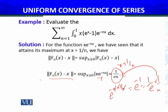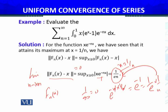To prove uniform convergence, taking the limit as n → ∞ of 1/(en) gives 1/∞ = 0. So we have proved that f_n(x), the sequence of partial sums for that series, converges uniformly to f(x) = x, the identity function. Now I can apply the term-by-term integration result.